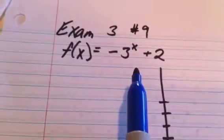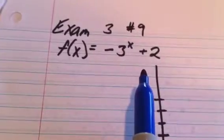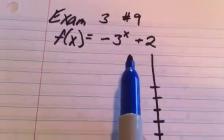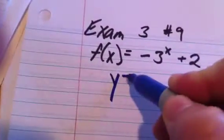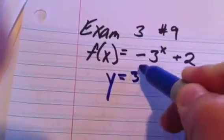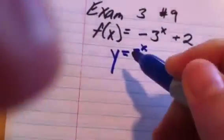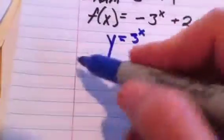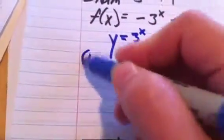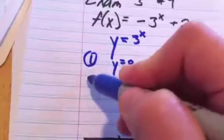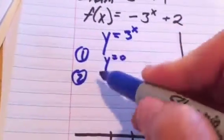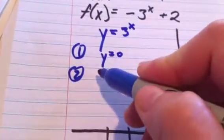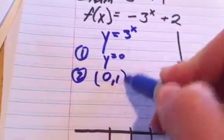So we're going to do this by taking a normal graph. If we just look at the graph of y equals 3 to the x, there's a few key points that all these basic graphs have. They have an asymptote at y equals 0, and they all go through the point (0, 1).